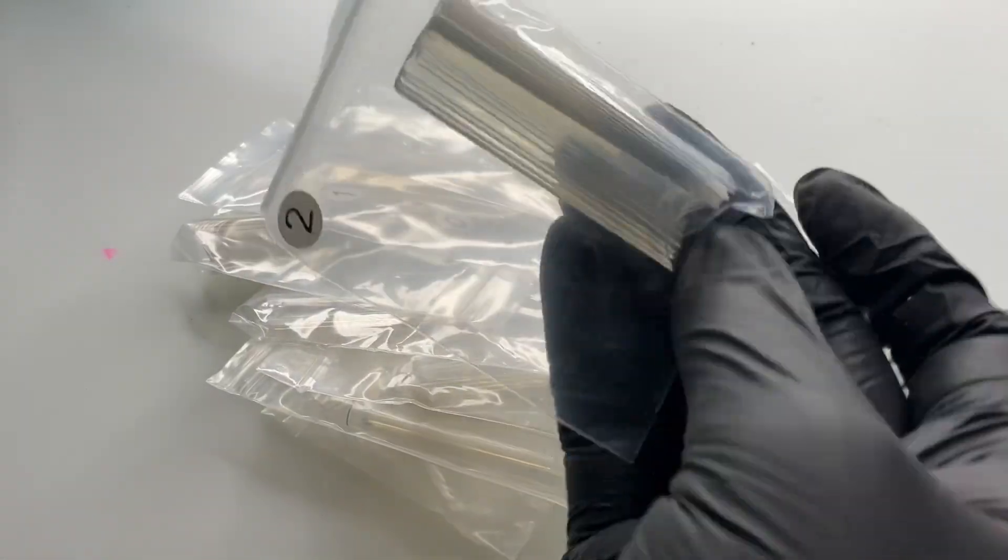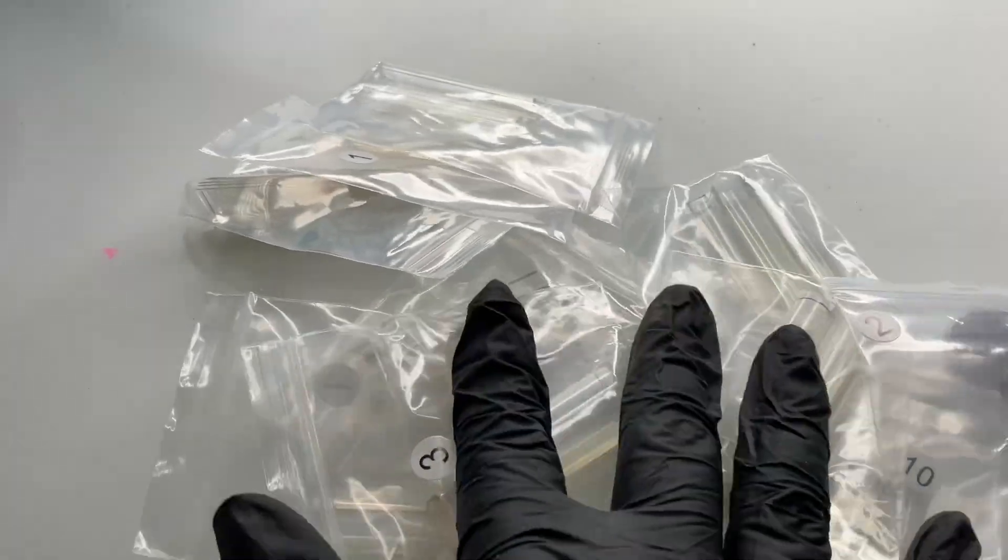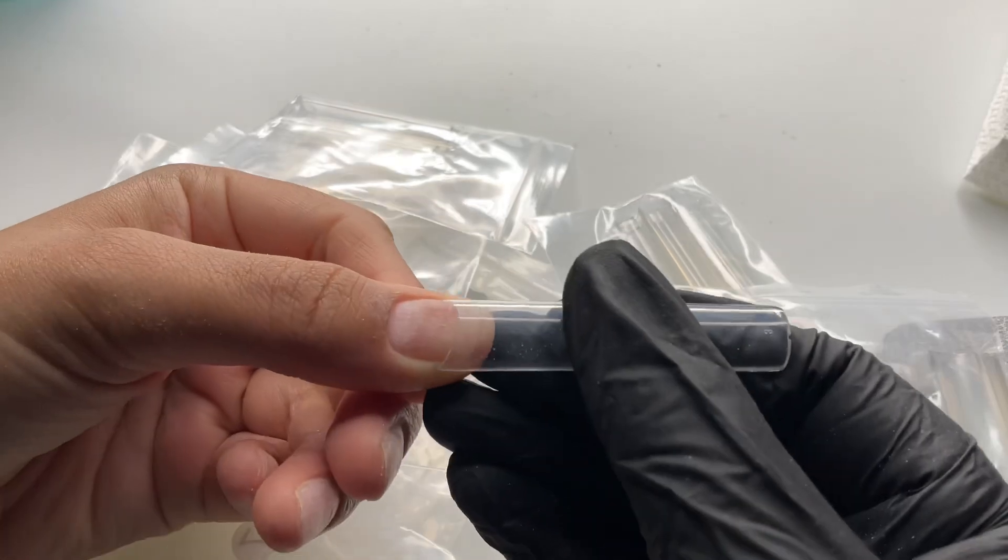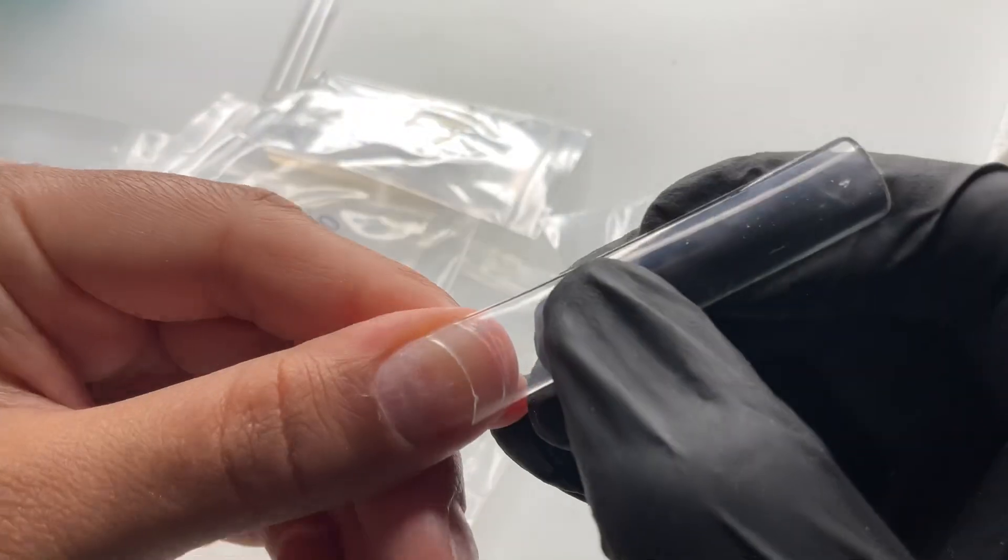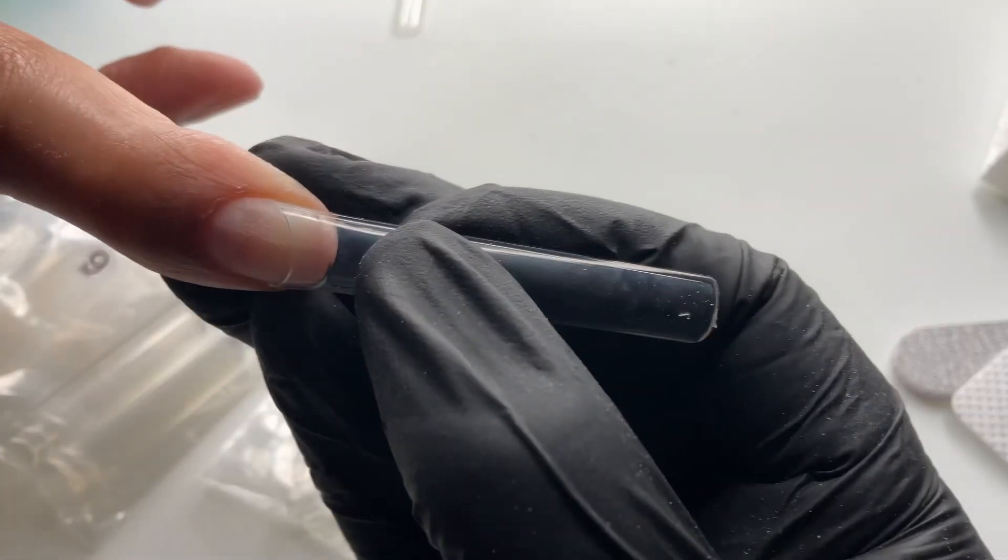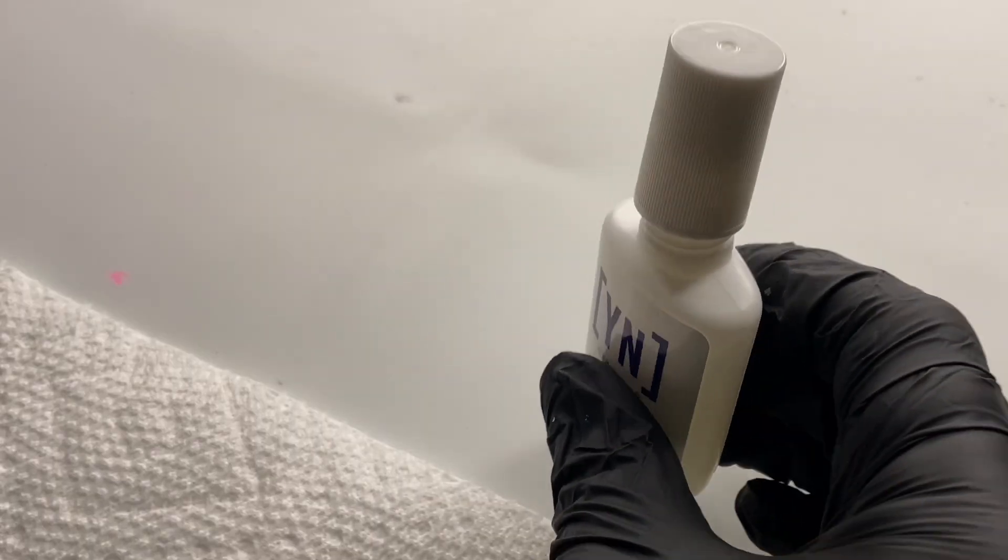Then we are going to be using these tapered square nail tips from the Bougie Bar. I'm just sizing them out. This one was a little bit too big, you can see how it's going over the sidewalls, so I'm taking a smaller size. This one fits a lot better. You really want it to fit sidewall to sidewall. Using the right size tip is pretty important for long lasting nails.